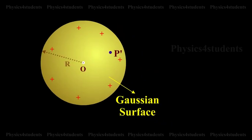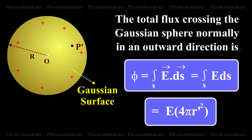The total flux crossing the Gaussian sphere normally in an outward direction is φ equals integral E vector dot ds vector equals integral E ds equals E times 4πr'².